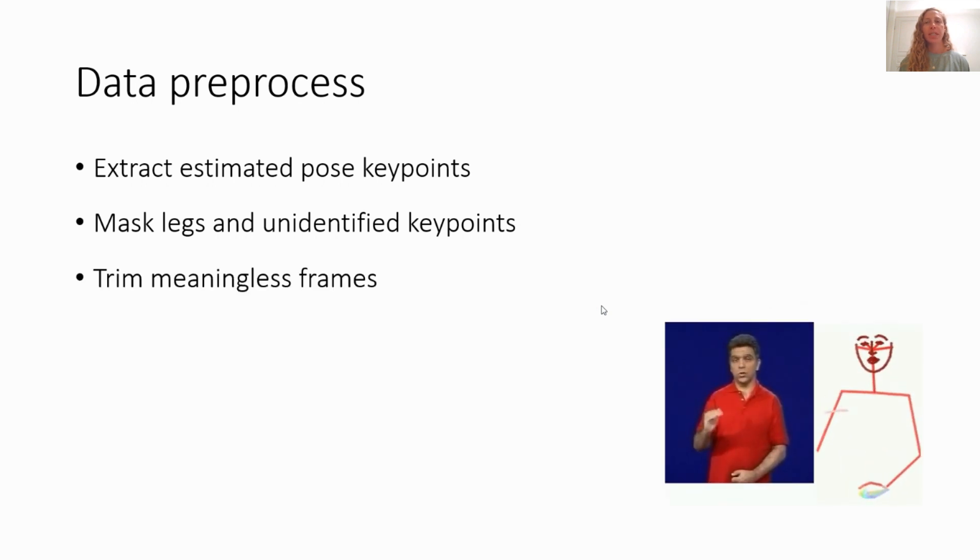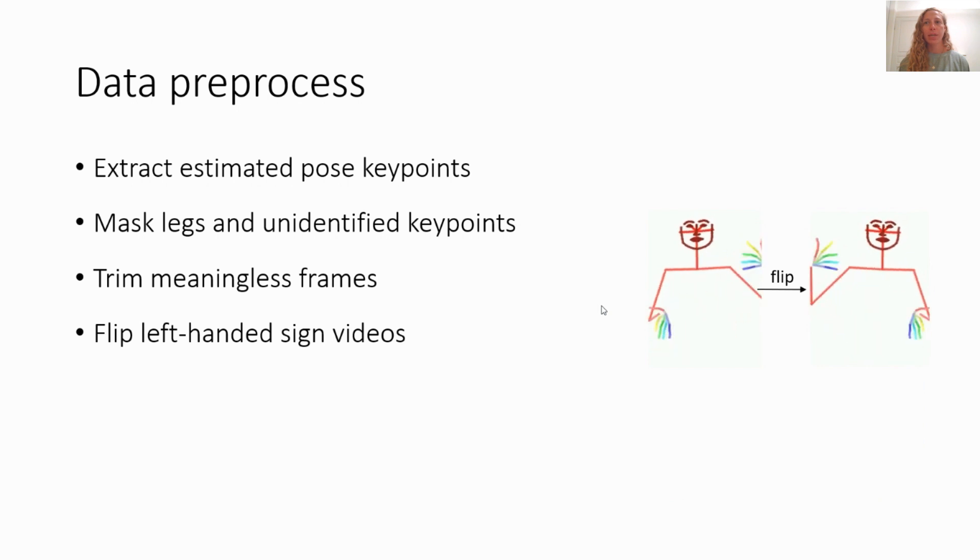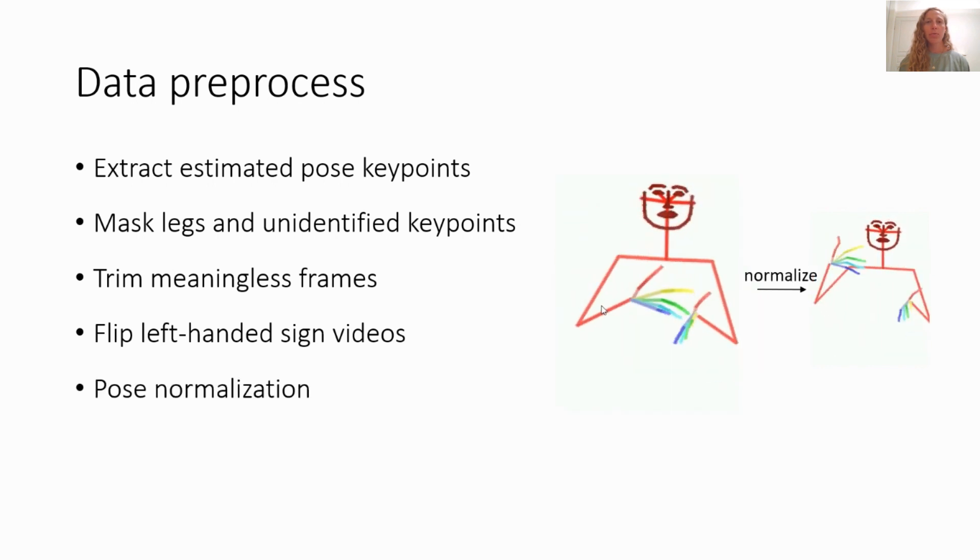Next, we trim meaningless frames by removing each leading or trailing frame in which there are not enough face or hand keypoints identified, as in the fade-in and fade-out frames in this example. Furthermore, as the signs have a dominant hand role and a non-dominant hand role, we flip left-handed sign videos so all videos are consistent. Finally, we normalize the poses so that the pose center is at the origin and the average distance between the shoulders is 1.